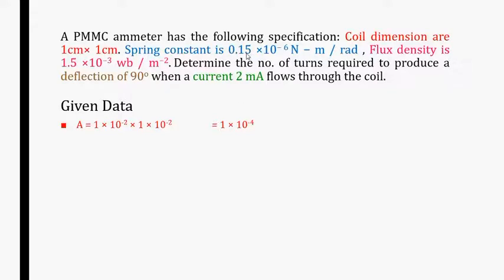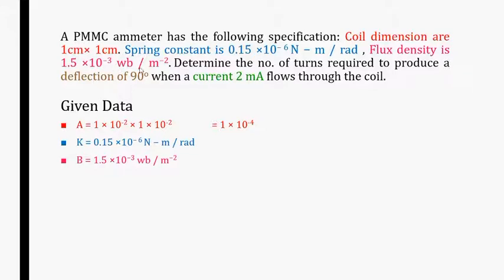The spring constant for this moving coil meter is given. Sometimes the spring constant may not be provided directly; instead, the coil material could be specified, like copper or aluminium. It is better to remember the spring constant of aluminium and copper, but here it is given in the problem so we can use it directly. The flux density is also given as 1.5 x 10^-3 Weber per meter square.